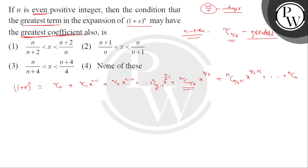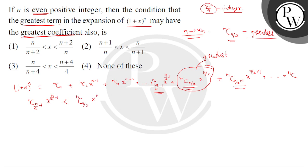The coefficient of the middle term must be the greatest. For this we need the greatest coefficient condition. We can see nC(n/2-1)·x^(n/2-1) and nC(n/2)·x^(n/2). Then we will have a condition here. So let's solve the condition.